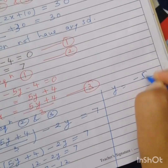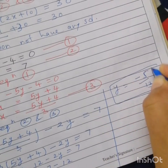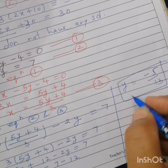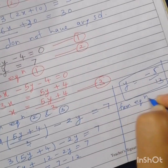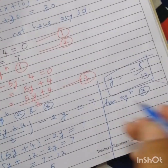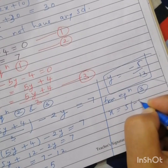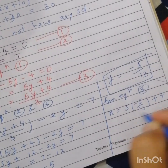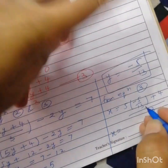Solving: y equals minus 5 divided by 13. Now put the value of y in equation three. From equation three: x equals 5 times (minus 5 divided by 13) plus 4, all divided by 3.